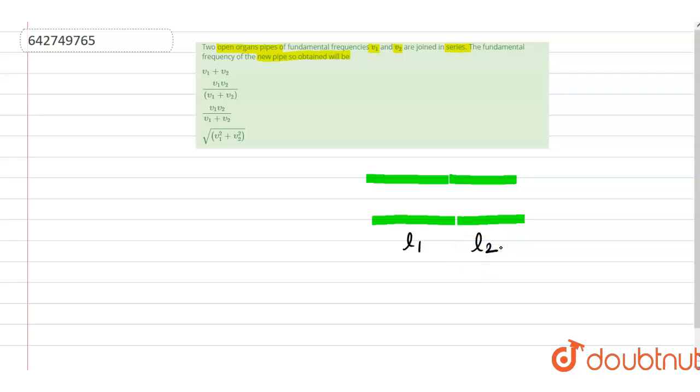Now they are joined together, so total length now would become L1 + L2. So now they are joined, so now the total length put together will be L1 + L2. So individually when I have pipe L1 and pipe L2,